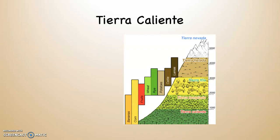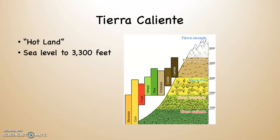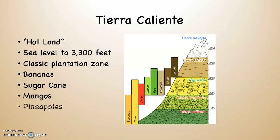The lowest elevation is called the tierra caliente, which translated from Spanish means 'hotland.' It goes from about sea level up to around 3,300 feet. This is the classic plantation zone — the crops typically grown there are bananas, sugar cane, mangoes, pineapples, and rice. The rice is mostly for domestic consumption, while the other products may very well be for export.